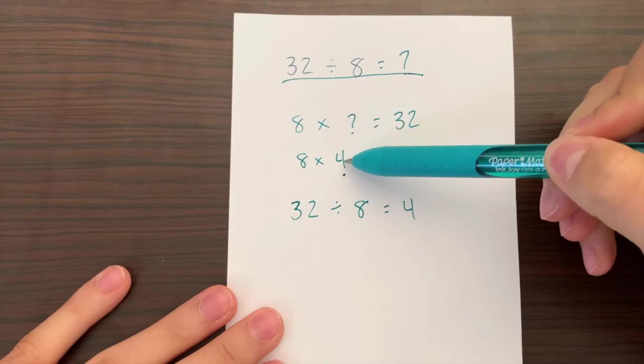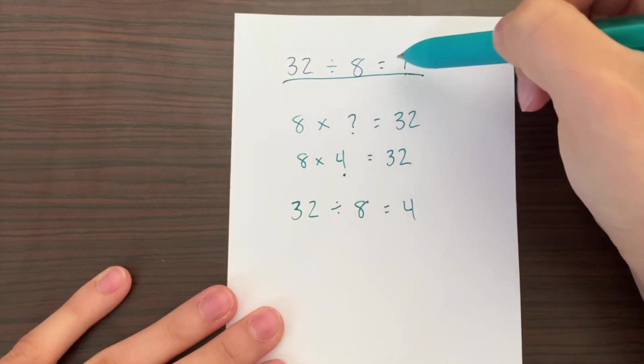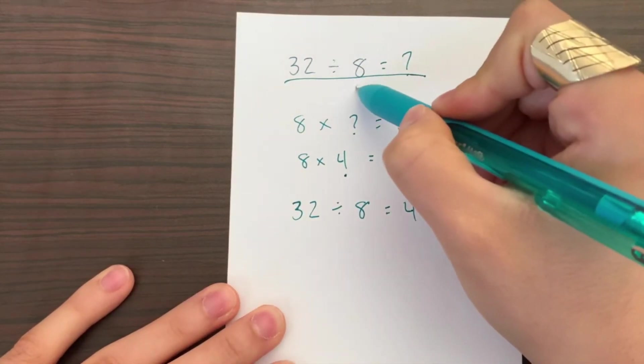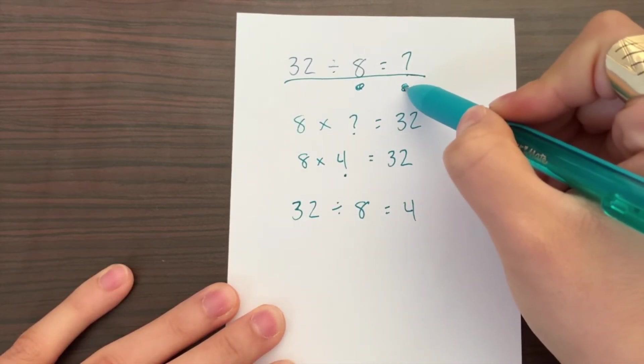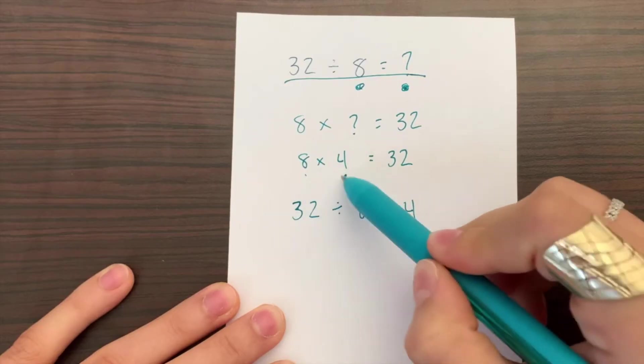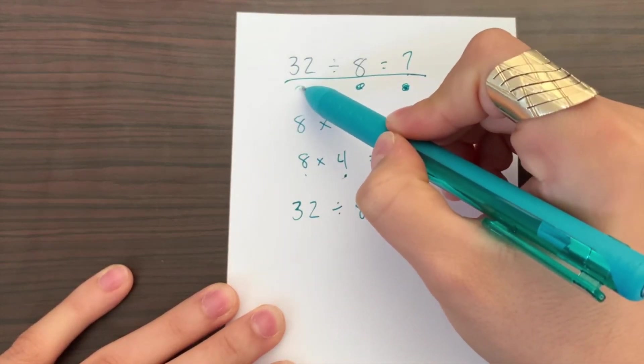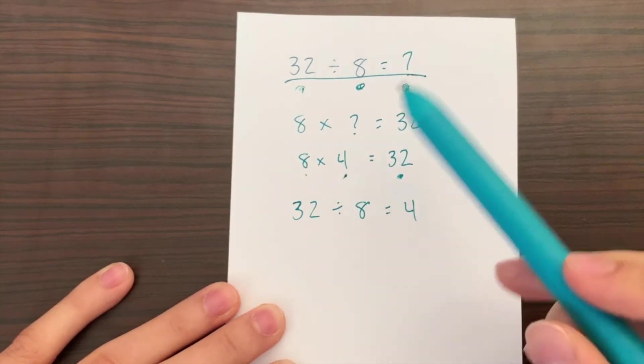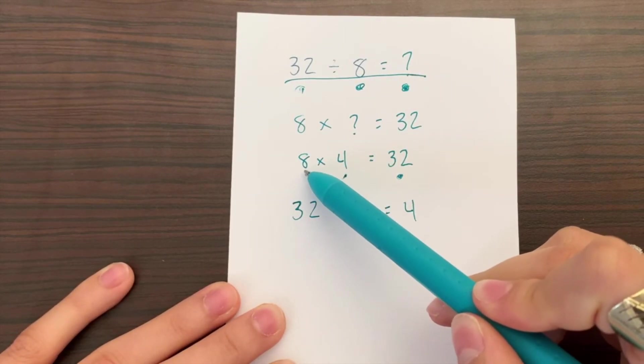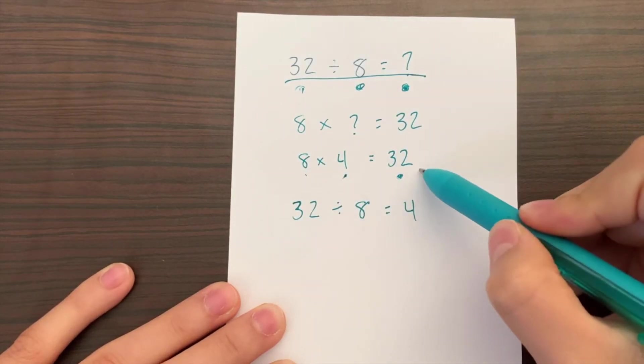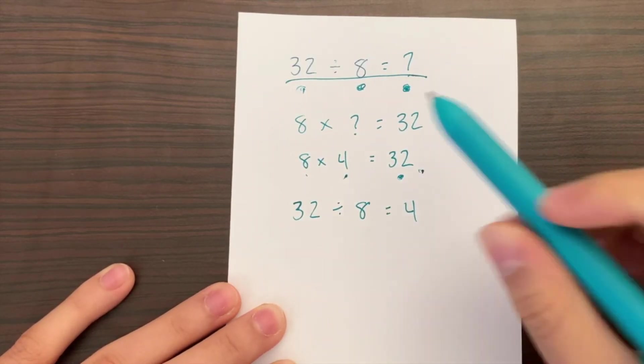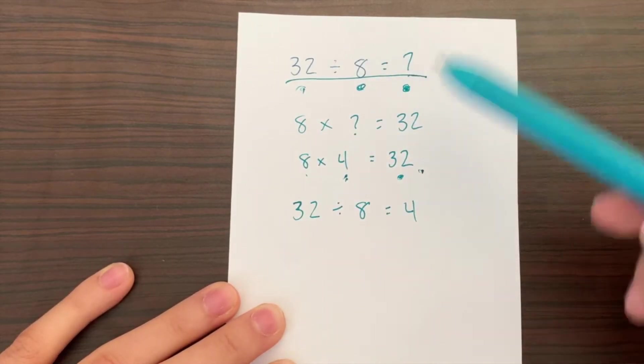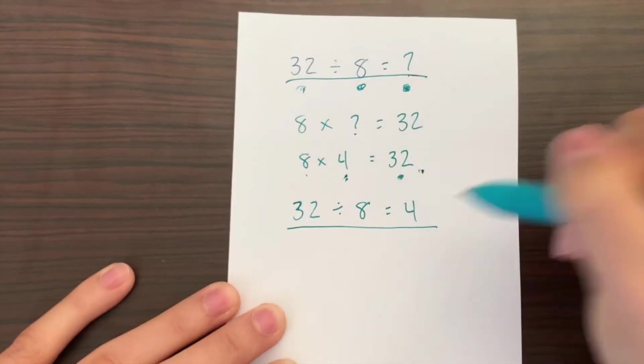So whenever you have an equation like this, you can go ahead and multiply this number that you have here and this number that you have here, and then you would get this number. But in order to do that, you have to be really good at multiplying. And then you can find what number do we have to multiply 8 by to get 32, which in this case would be 4. And then you would find the answer to your division problem, so 32 divided by 8 is equal to 4.